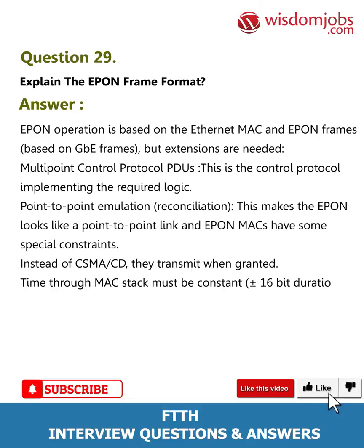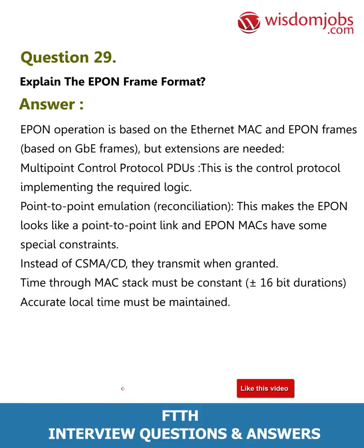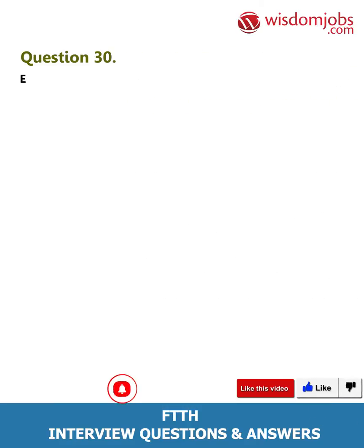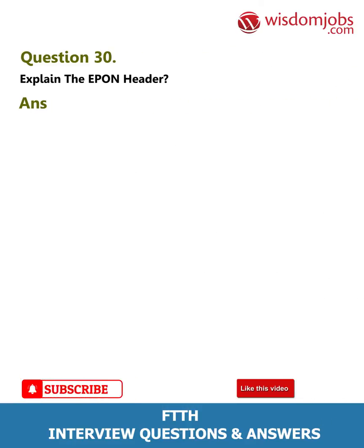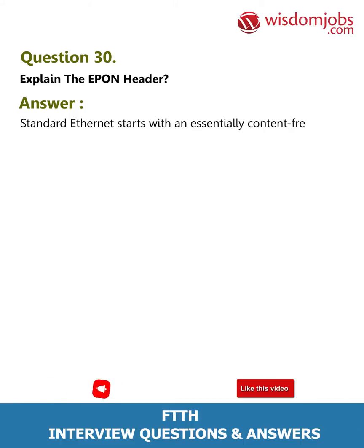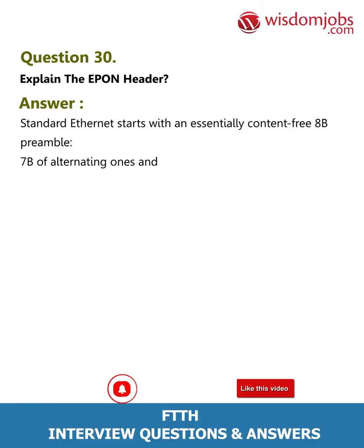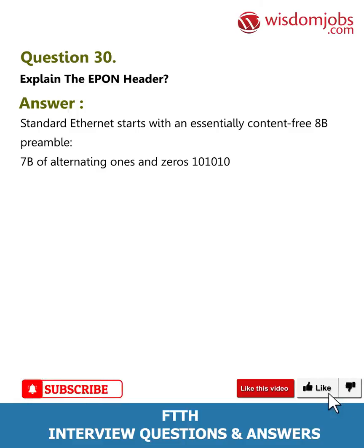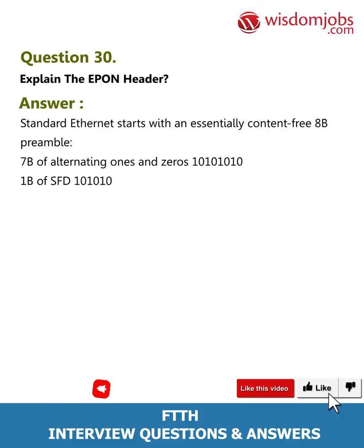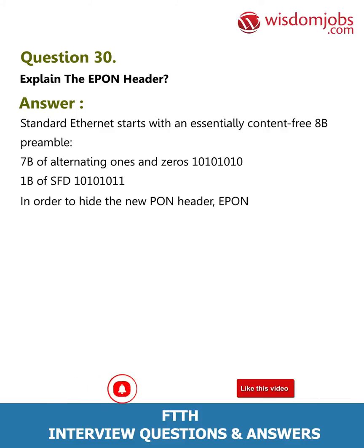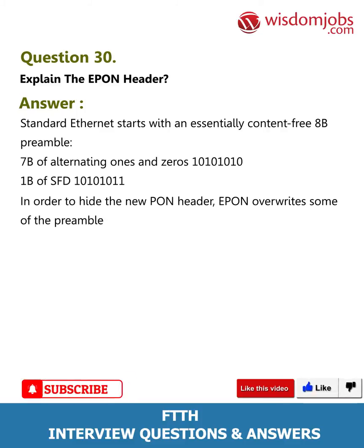Question 30: Explain the EPON header. Answer: Standard Ethernet starts with an essentially content-free 8-byte preamble — 7 bytes of alternating 1s and 0s, and 1 byte of SFD (10101011). In order to embed the new PON header, EPON overrides some of the preamble bytes.